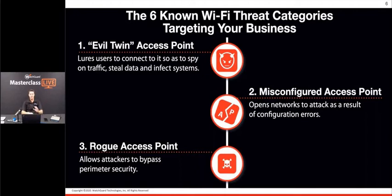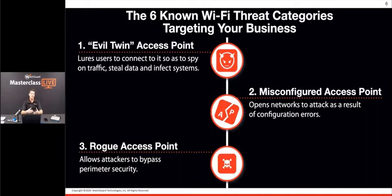The second threat is misconfigured access points. In environments without cloud management, it's easy to misconfigure APs, opening the network to threats. For example, an access point at the back of a factory with no security could be open without anyone realizing. WIPs can stop clients from connecting to such misconfigured or open networks.